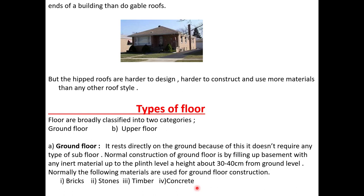Next are the types of floors. We have the ground floor and upper floors; the number of upper floors depends on the height or number of storeys in the building. The ground floor rests directly on the ground, so it doesn't require a separate sub-floor — the sand directly offers a supporting force. Normal construction of the ground floor involves filling the basement with inert material like sand or stones, then placing the floor. Materials used include brick, stone, timber, and concrete, based on availability.